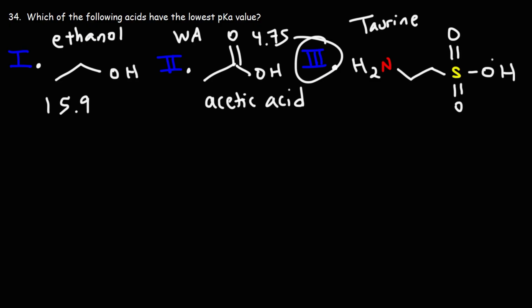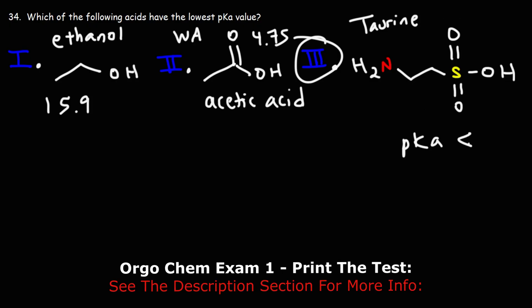Number three is the correct answer — it has the lowest pKa. We can assume the pKa for taurine's sulfonic acid group is less than zero, perhaps negative one or negative two, since methane sulfonic acid is negative two and taurine similarly has just a carbon chain. So we'd expect it to be somewhere around negative two.